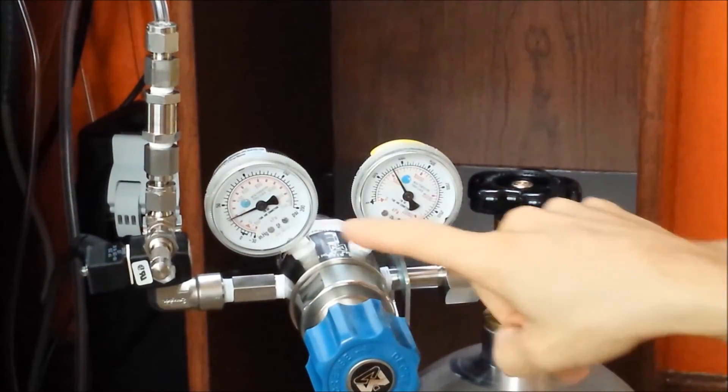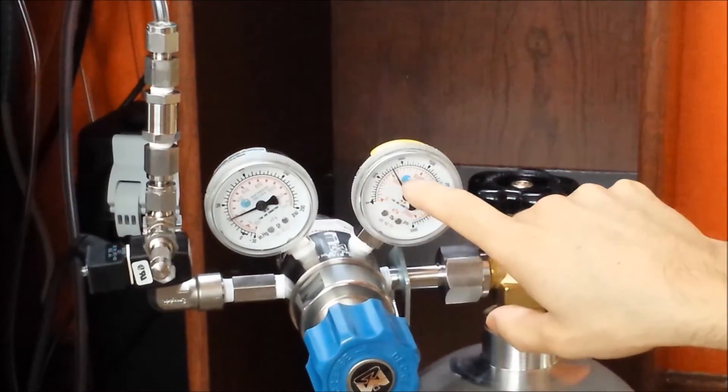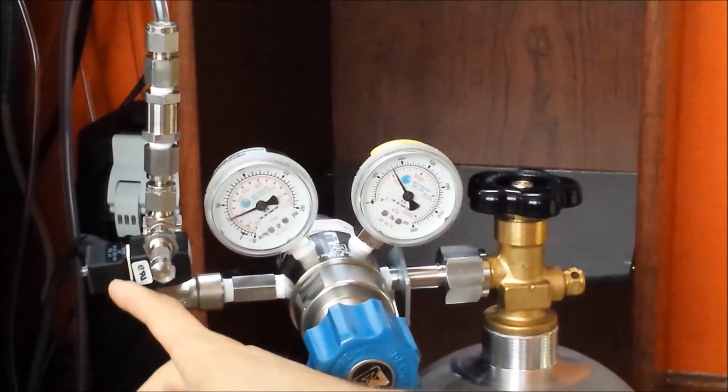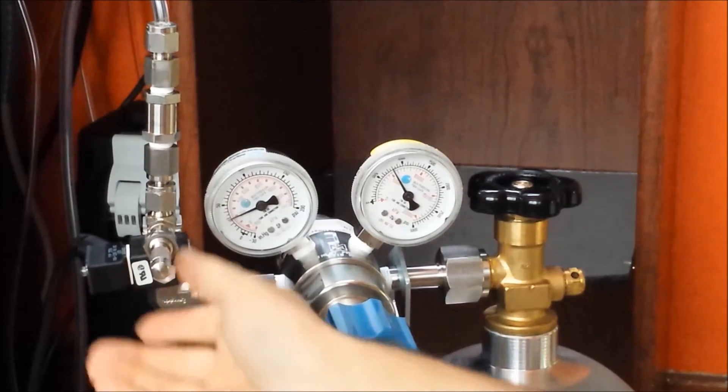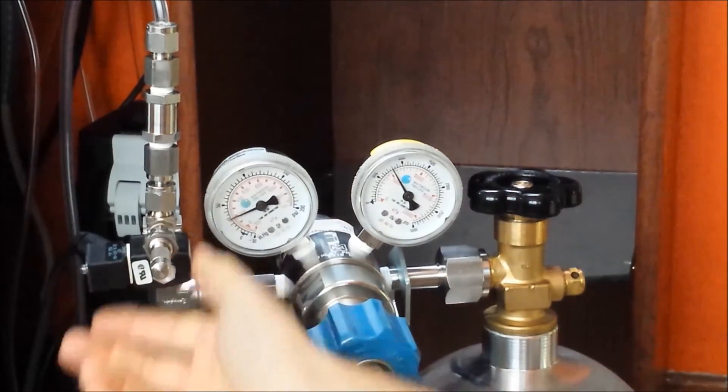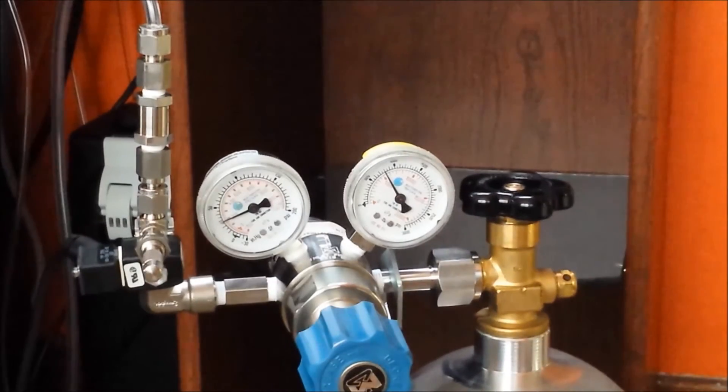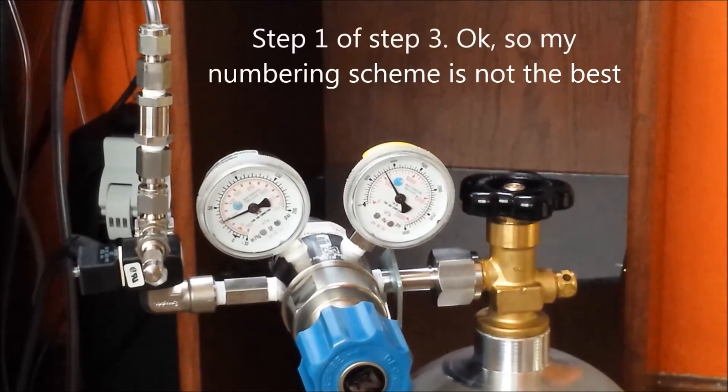Alright, we are adjusted right at 30. So we've got the tank pressure of 800 psi here. And 30 psi coming out over here. This is the solenoid right here. Right now that is powered off. Or it's not plugged in. So it's not getting power which means the valve in there is closed. So that is step one.